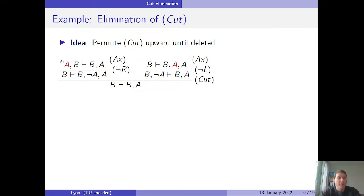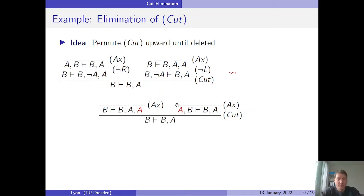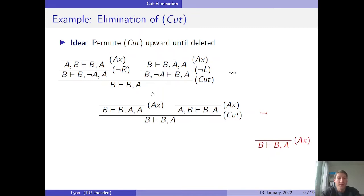Looking at the two sequents from the premises of those negation rules: one has A on the right and the other has A on the left, and the contexts otherwise match. We can apply the cut rule to these axiom instances, giving a derivation where the cut has been moved upwards. The conclusion of this resulting proof turns out to be an instance of the axiom rule itself, since formula B occurs on both the left and right-hand sides. This example shows how cut elimination works — how it gets moved upwards in a proof.